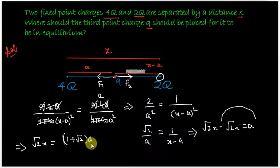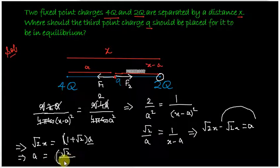To find this distance a, keeping a on the right hand side, we can say a equals √2 upon (1 plus √2) times x. When we solve this we get 0.59 times x.